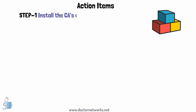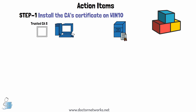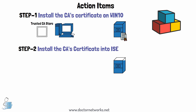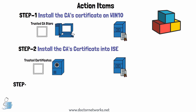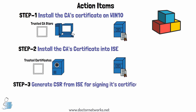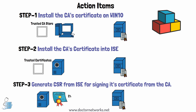For the action items of this lab: first, we will download and install the CA's certificate into the trusted certificate authority store of the Windows 10 machine. Second, we will install the same certificate into ISE's trusted certificates store. Third, Cisco ISE will generate a CSR — a certificate signing request — and get it signed by the CA. Finally, we will install the signed certificate on ISE, trusted by both Windows and ISE.